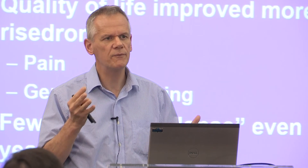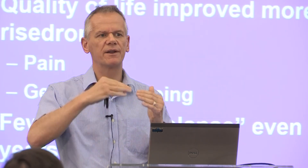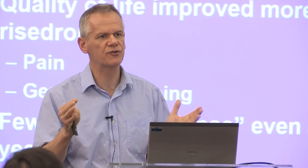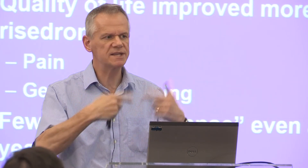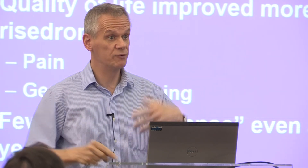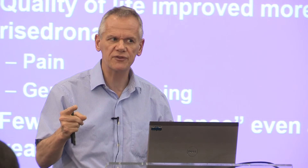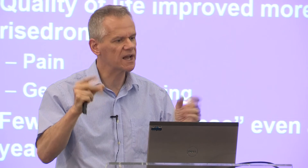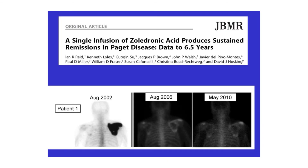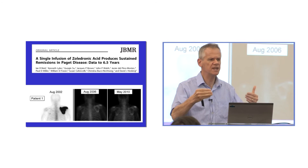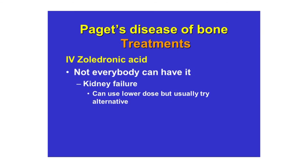Relatively few patients relapse over five to six years after a single dose. We're now seeing patients more than ten years since they received their dose of zoledronic acid and are beginning to see a few whose Paget's disease starts to become active again. About ten to twenty percent of patients after about eight to ten years may need another dose. We repeat their bone scan and blood test to confirm reactivation before giving another dose.